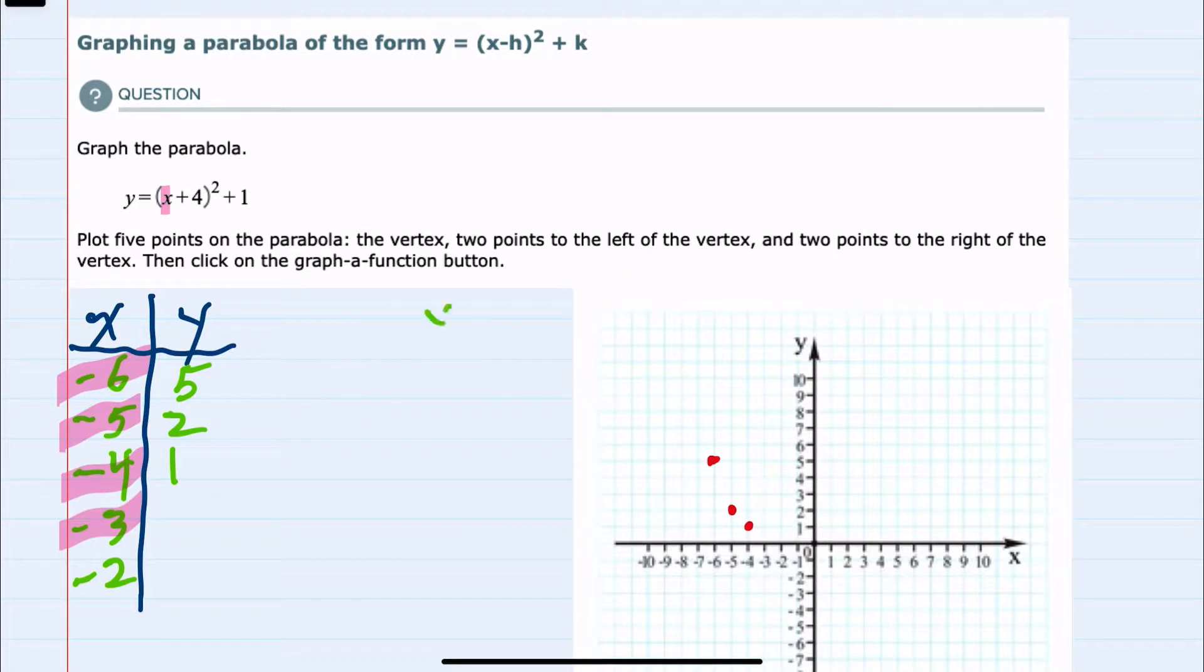Substituting in, y would now equal (-3 + 4)² + 1. Inside the parentheses, we now have 1 squared plus 1. 1 squared is 1, so simplifying y equals 2 is our fourth coordinate. That occurs at the point (-3, 2).